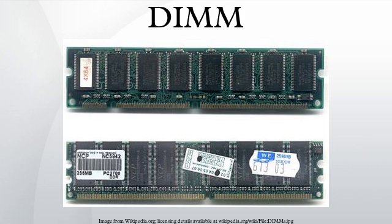Since Intel's Pentium, many processors have a 64-bit bus width, requiring SIMMs to be installed in matched pairs in order to populate the data bus. The processor would then access the two SIMMs in parallel. DIMMs were introduced to eliminate this practice.